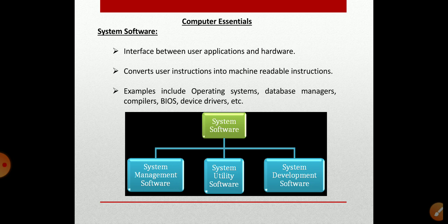There are three types of system software: system management software, system utility software, and system development software. System management software, as the name indicates, manages computer systems in an enterprise, including functions such as software distribution, upgrading, user profile management, version control, backup, recovery, job scheduling, and virus protection. These are all performed by system management software, which cares about the overall management of the computer system.